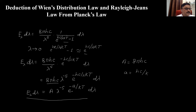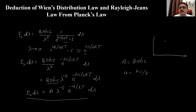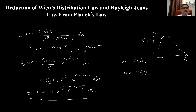This equation is actually Wien's distribution law, applicable in the low wavelength region of the blackbody radiation spectrum. If we look at the blackbody radiation spectrum — with E_λ dλ along the y-axis and wavelength along the x-axis — the low wavelength region of the curve at a particular temperature is explained by Wien's distribution law. In this simple way, we can derive Wien's distribution law from Planck's radiation law.